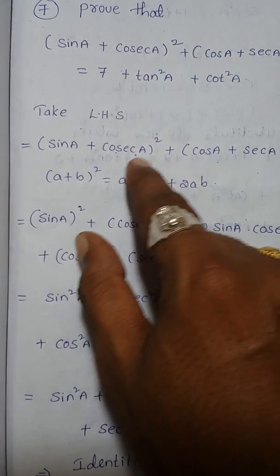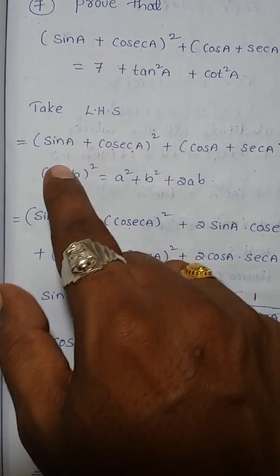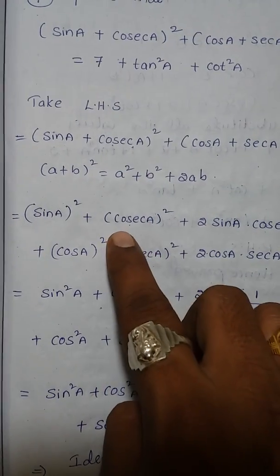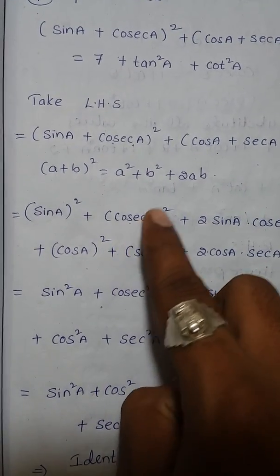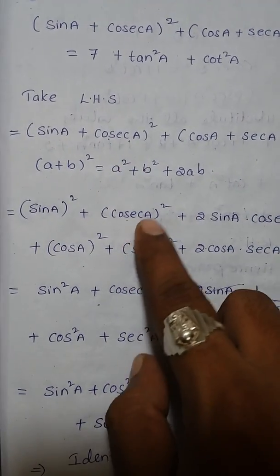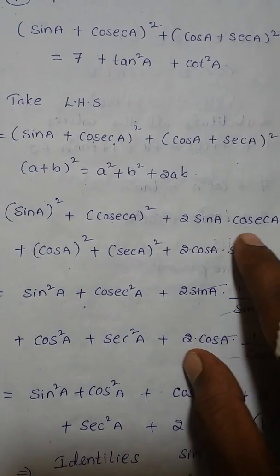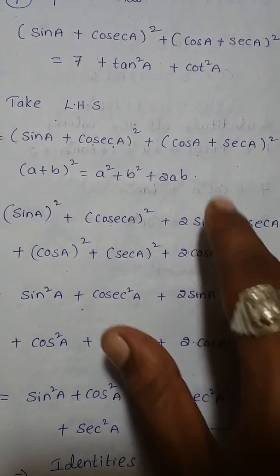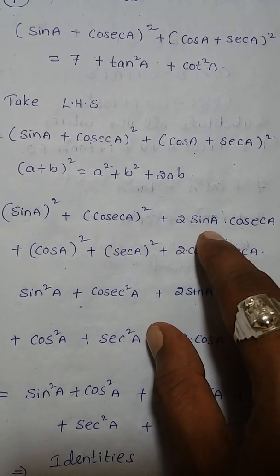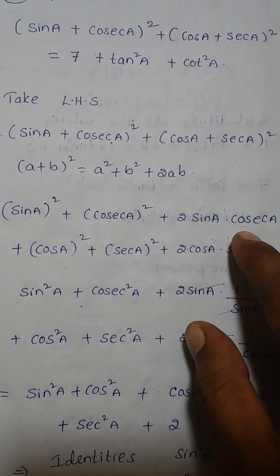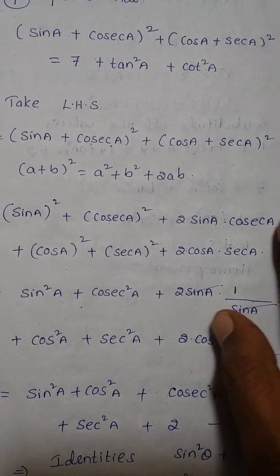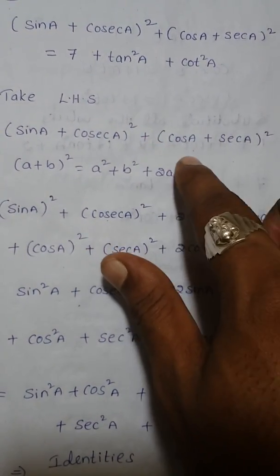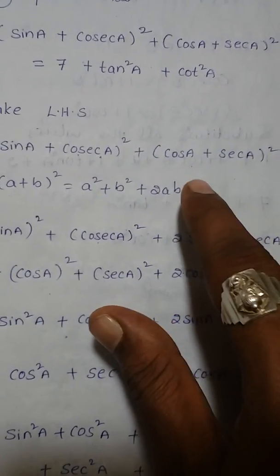In (sin A + cosec A)², a is sin A and b is cosec A. Applying the formula: sin²A + cosec²A + 2·sin A·cosec A. For (cos A + secant A)², a is cos A and b is secant A.